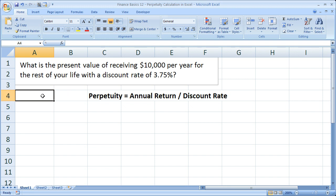So let's go ahead and do that right here. Equals 10,000 divided by 0.0375. Make sure that you put that as a decimal. So don't put 10,000 divided by 3.75. It needs to be divided by 0.0375. When you're done with that, hit enter.